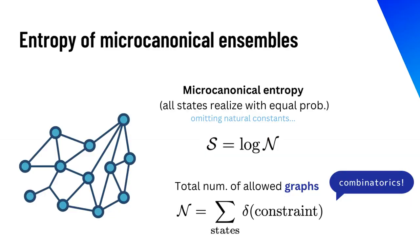The entropy of a microcanonical ensemble is provided as the logarithm of the total number of graphs. In the previous example, it was three. However, counting the total number of graphs is not always trivial.